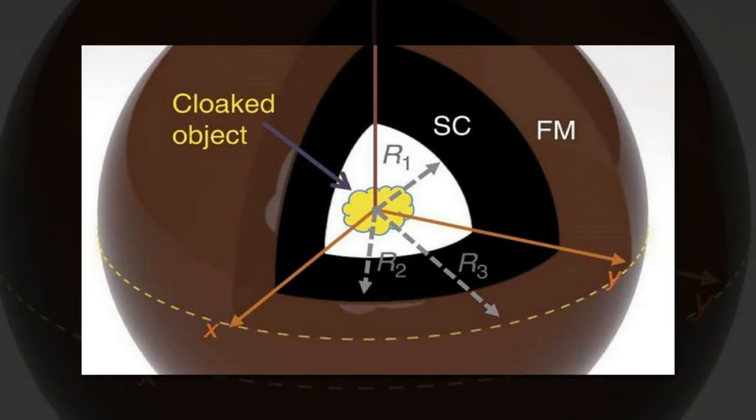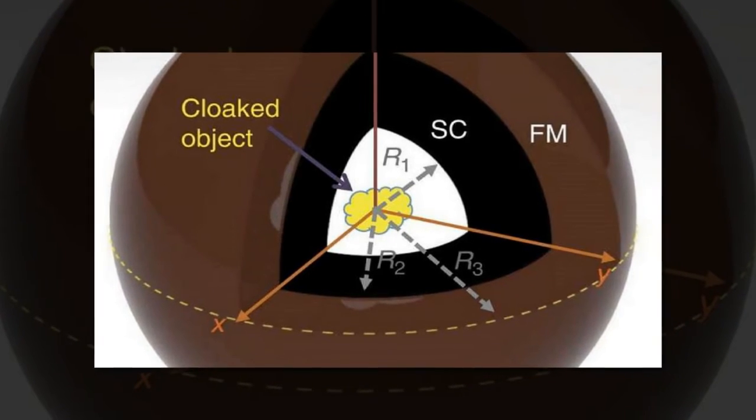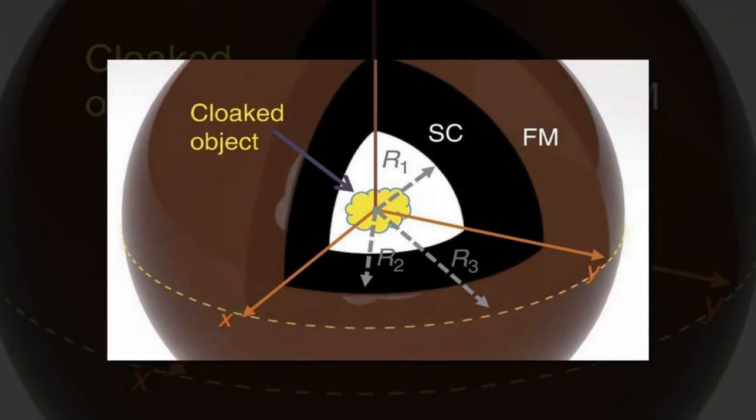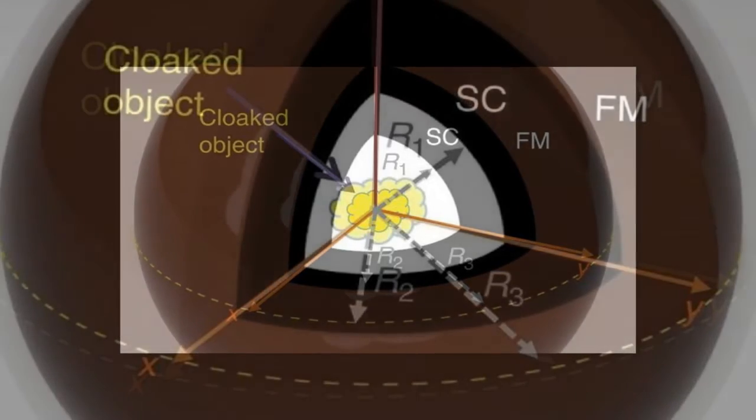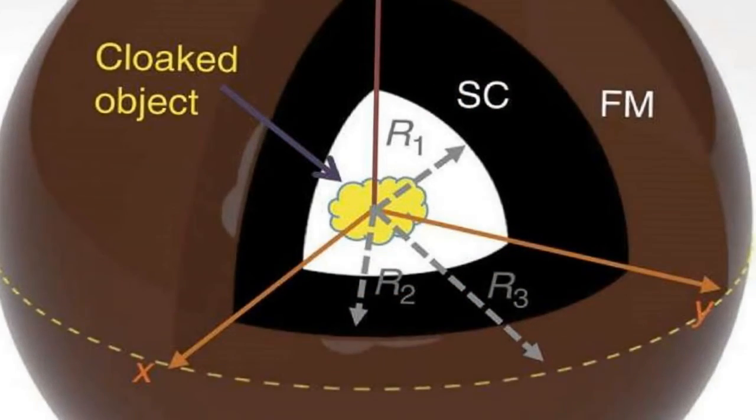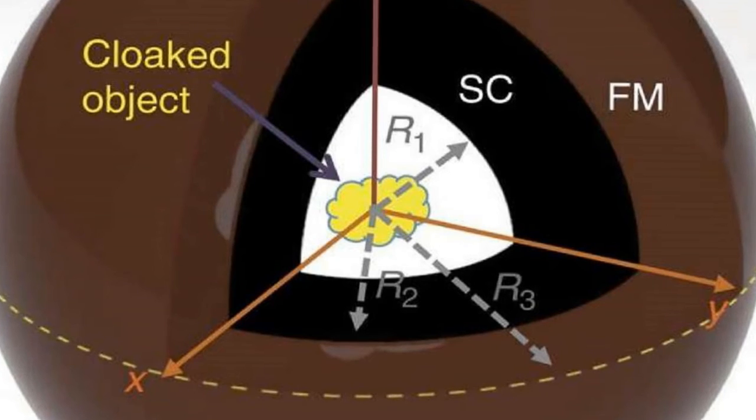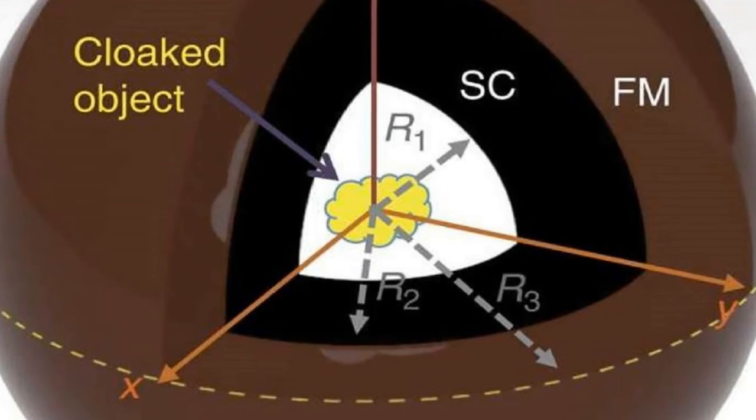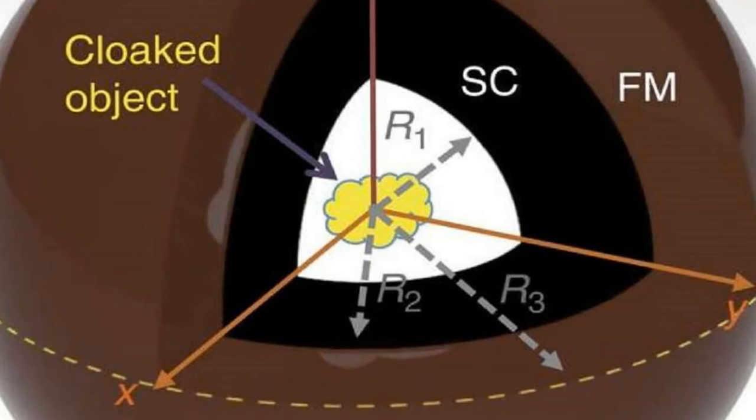Like other invisibility cloaks, the new cloak is made of metamaterials, man-made materials with repeating patterns, and works by manipulating electromagnetic waves in unusual ways. To achieve the cloaking effect, the researchers used a new type of invisibility cloak called a bilayer cloak.